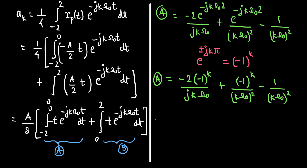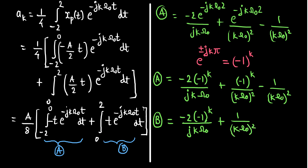Similarly, part b turns out to be: minus 2 times (minus 1)^k over j k omega_0, plus minus 1 over (k omega_0) squared, minus (minus 1)^k over (k omega_0) squared. When we add parts a and b together and substitute them back, we can calculate the final expression for a_k.